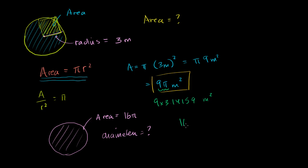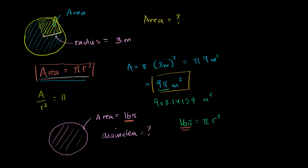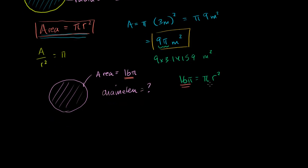So the area, 16π, is equal to π times our radius squared. I'm just applying this formula. So area, which we've been told is 16π, is equal to π times radius squared. Now, if we divide both sides of this equation by π, we get 16 is equal to r². And then you take the square root of both sides, and you get 4 is equal to r.